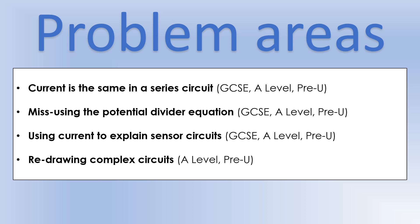First one is an absolute pain when marking work, because I see this all the time: the rule that current is the same in a series circuit, and I'll show you where that goes wrong. Second, misusing the potential divider equation - we'll look at several examples. Third, when using sensor circuits with LDRs and thermistors, people often try to use current to explain how they work, which leads them into trouble. Finally, we'll look at redrawing circuits to make them simpler.